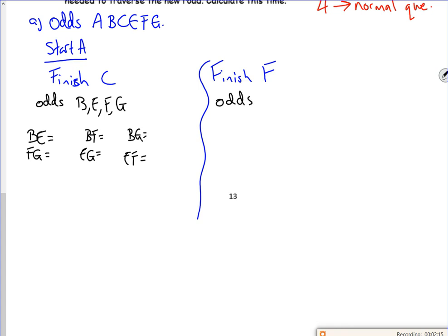So for finishing at F, the odds will be B, C, E, and G. So I'd have BC with EG, BE with CG, or BG with CE. If I use the completed pack: BE with FG is 20 and 25, which gives 45. BF with EG is 29 and 15, which gives 44. And BG with FE is 21 and 15, which gives 36.